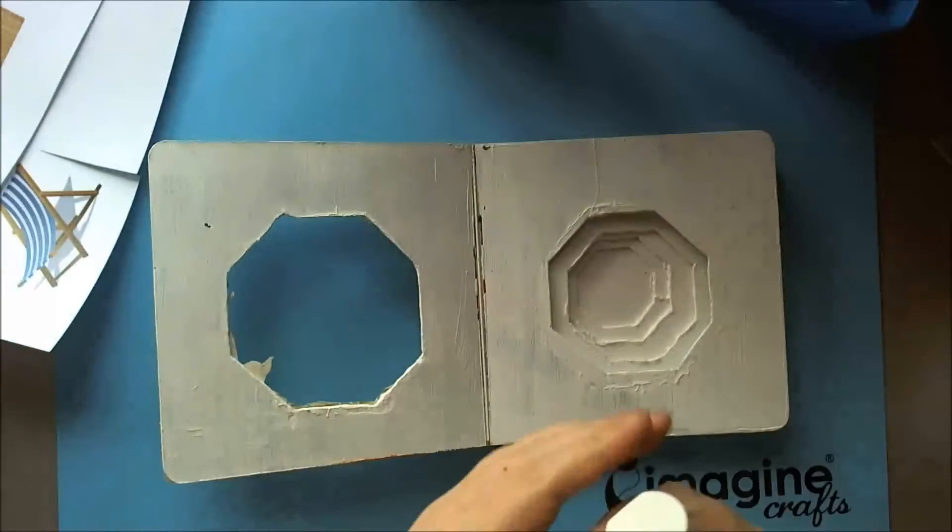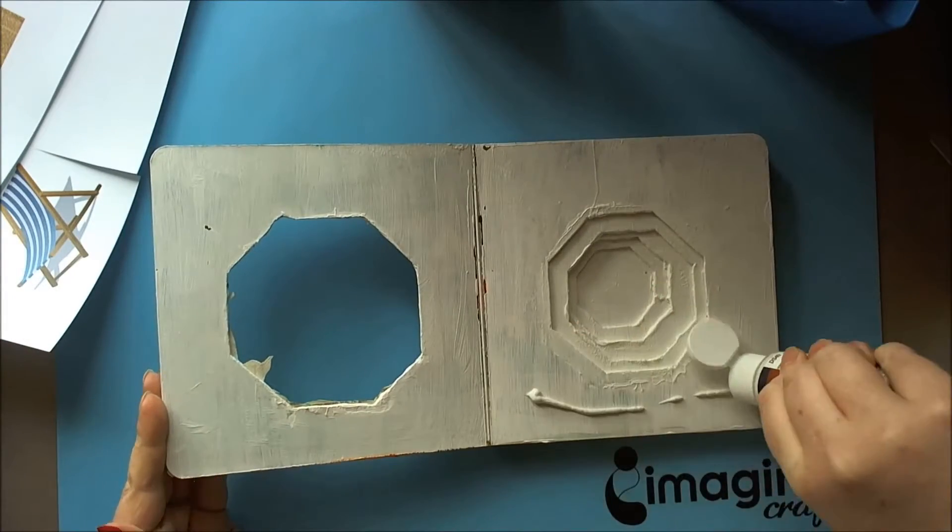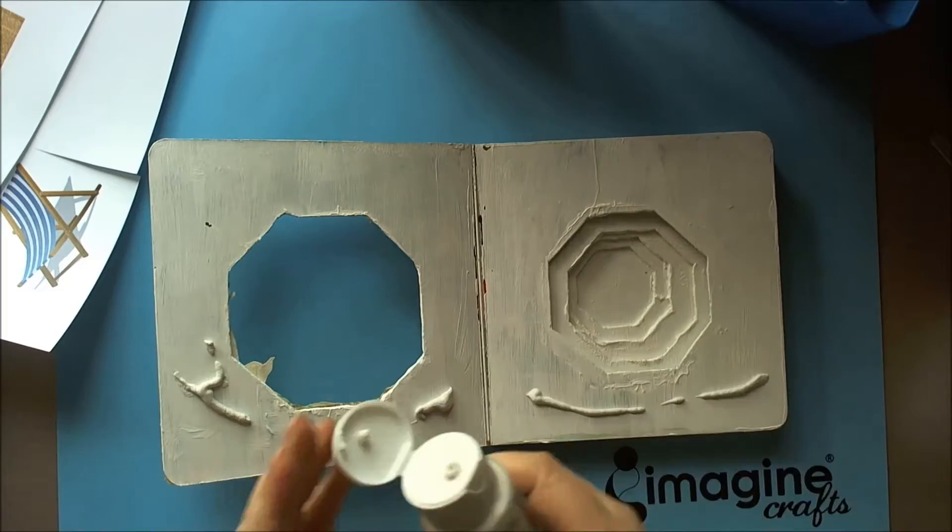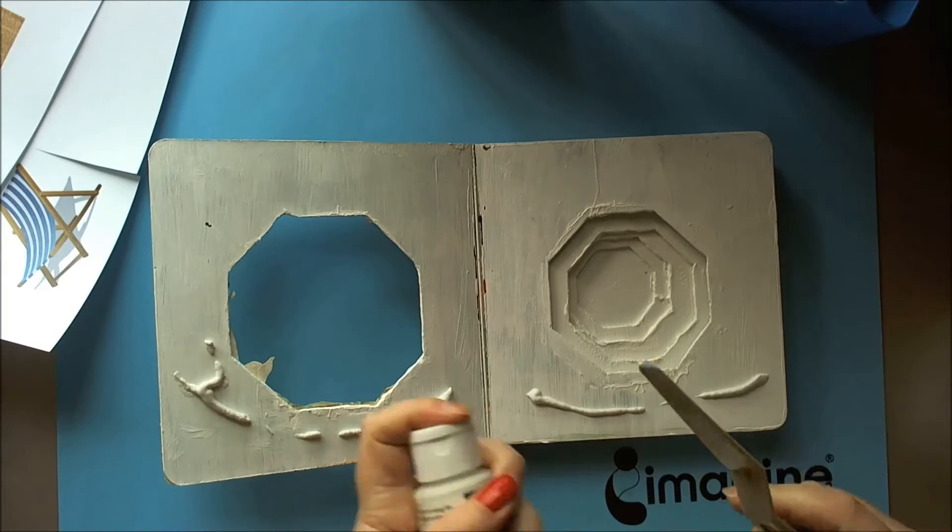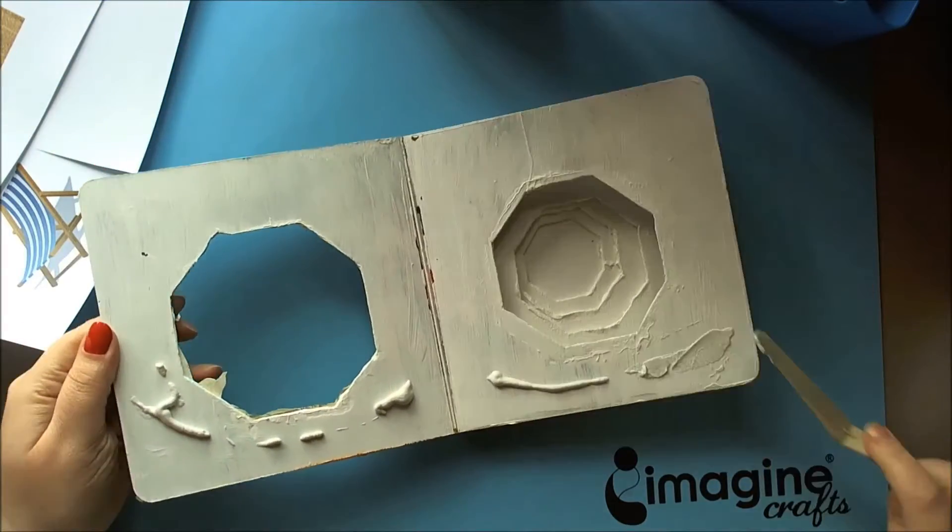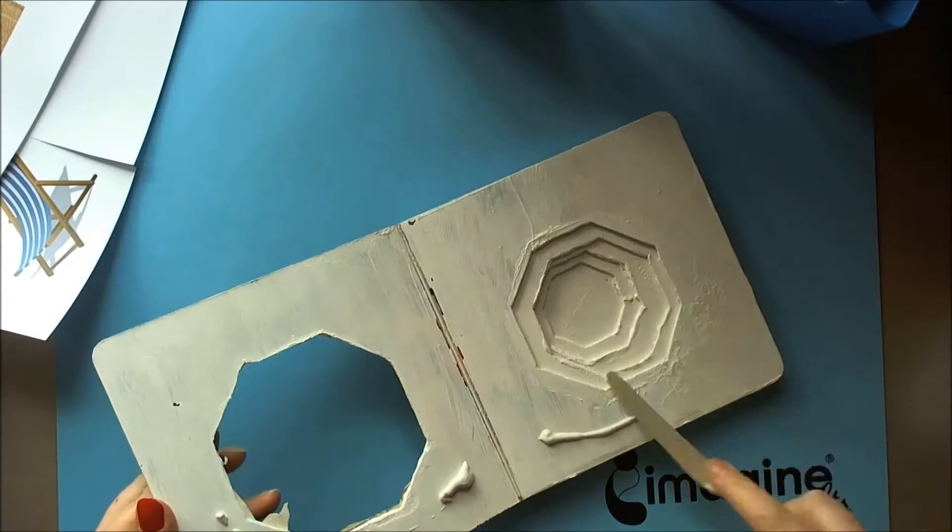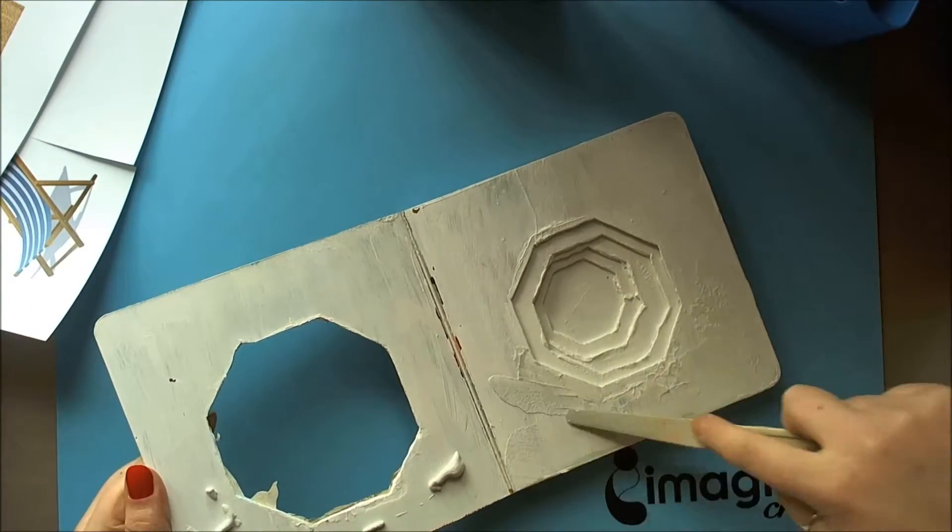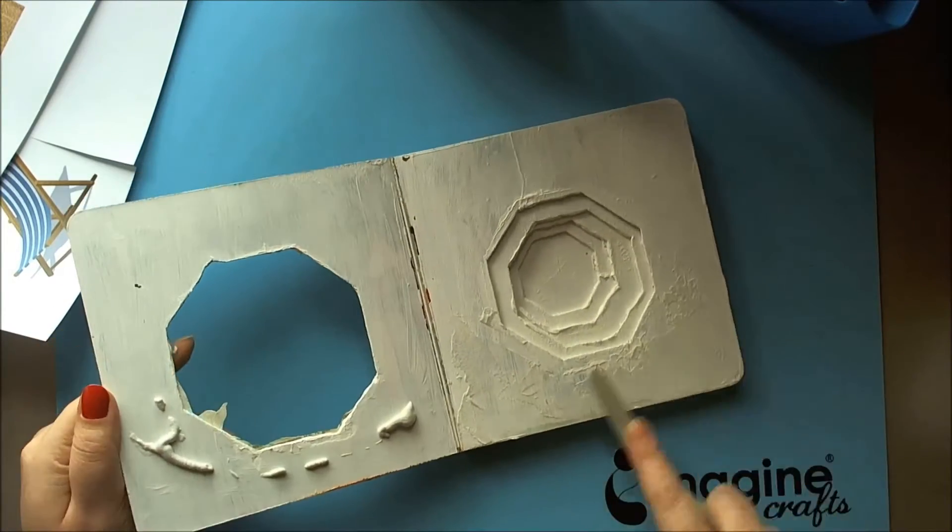I'm starting off with some texturizing medium from DecoArt. It's basically sand in a medium so it sticks, and I'm putting that down straight from the bottle and smoothing it out to where I want it to be with a palette knife.